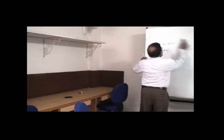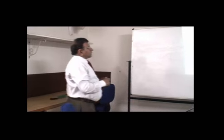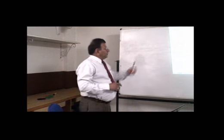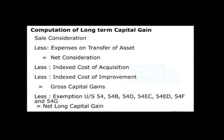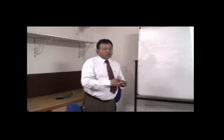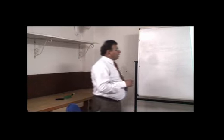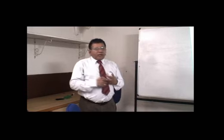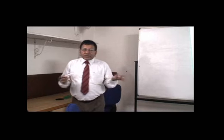Now we will understand how to compute long term capital gain. The procedure is different. First we record the sale consideration, then deduct expenses on transfer of asset to get the net consideration — same as before. But here we reduce the indexed cost of acquisition, rather than the actual cost of acquisition as in short term capital gain. We also reduce the indexed cost of improvement. The only key difference between the computation of short term capital gain and long term capital gain is the use of indexed cost of acquisition.